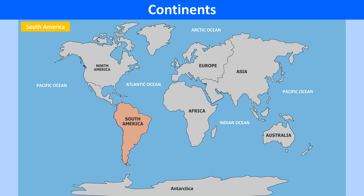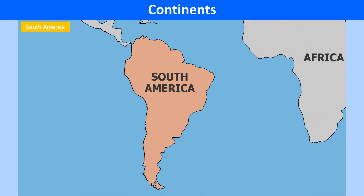South America is the fourth-largest continent in the world, covering one-eighth of the Earth's land surface. It is bounded by the Pacific Ocean on the west and the Atlantic Ocean on the north and east. South America has the largest river basin in the world, drained by the Amazon River. Paraguay, Uruguay, and Orinoco are the other major rivers.